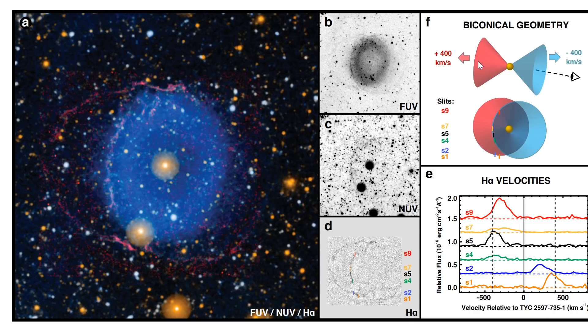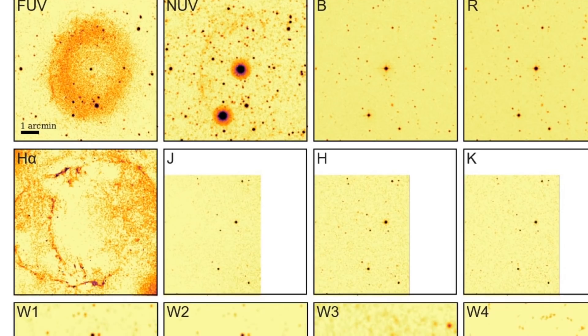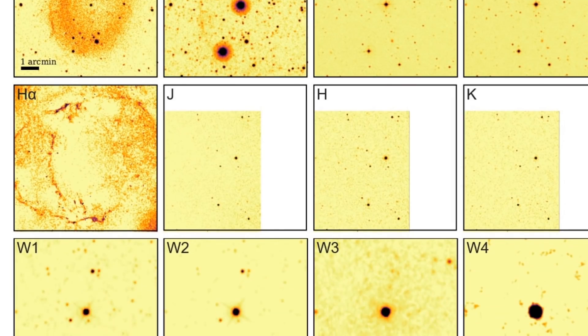And this is what the scientists refer to as the biconical geometry and they present a very good analysis of what exactly we're seeing here. Establishing the exact speeds of these two cones and explaining in detail what they believe happened here which actually makes a lot of sense.